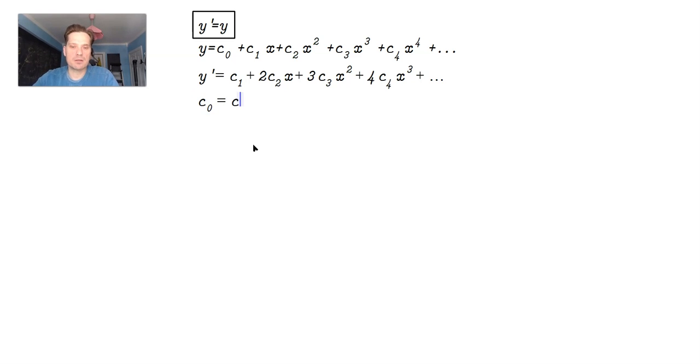So that means that c sub 0 must be equal to c sub 1. It also then tells us that c sub 1 must be equal to 2 c sub 2.